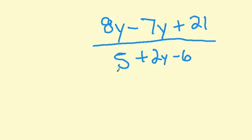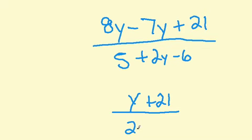Still more simplification to go because we have common like terms. 8 minus 7 gives us just a y. If there's a 1 in front we don't write it. Plus 21, all over, we have a like term again: 5 and 6. So we'll put the 2y in front, minus 1. Negative 6 plus 5 gives us negative 1.